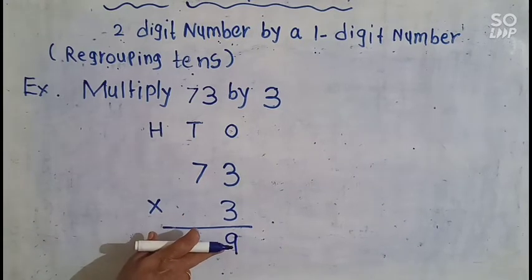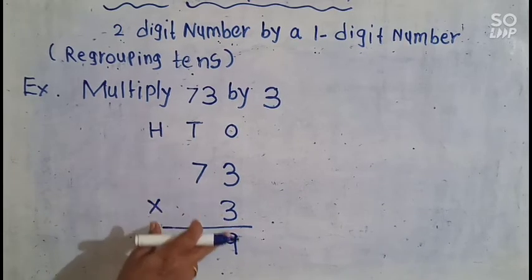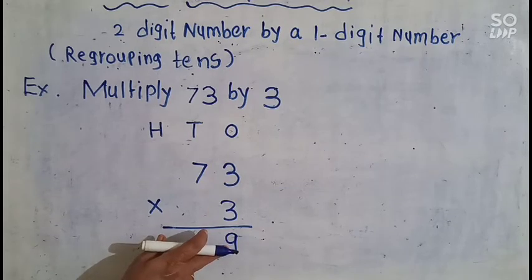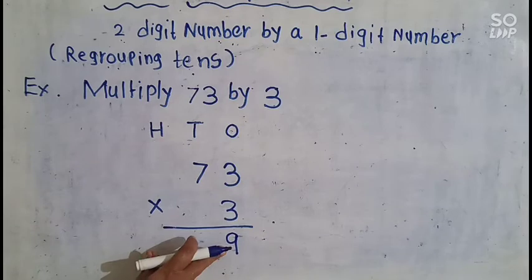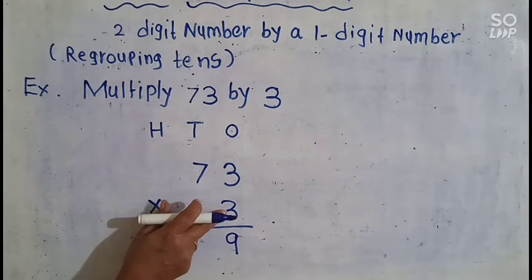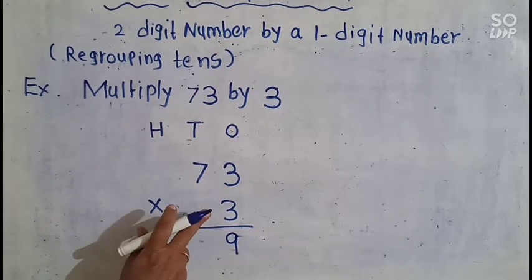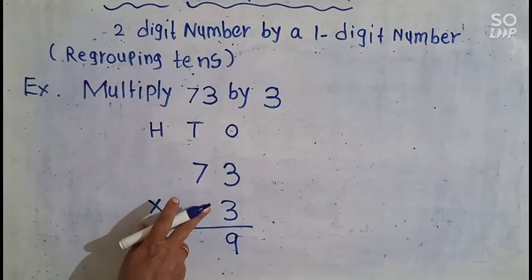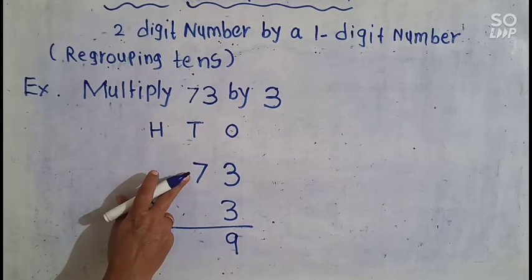In the 1s place, when we multiply 3 × 3 the answer is 9 — just 1 digit. So this 9 comes in the 1s place only. Now we multiply the 10s place: 3 7s are — 3 1s are 3, 3 2s are 6, 3 3s are 9, 3 4s are 12, 3 5s are 15, 3 6s are 18, 3 7s are 21.